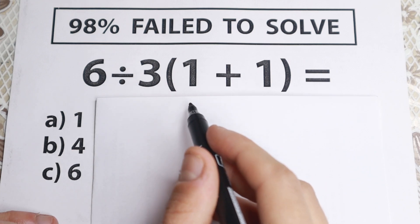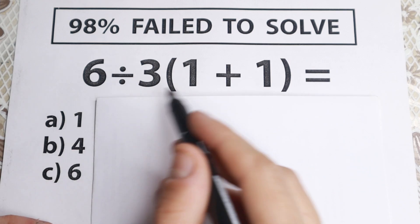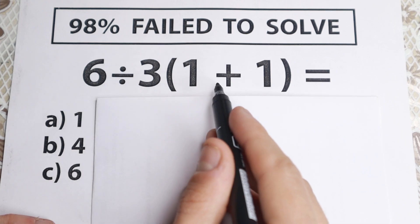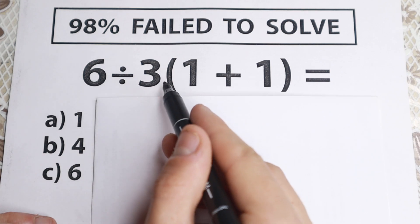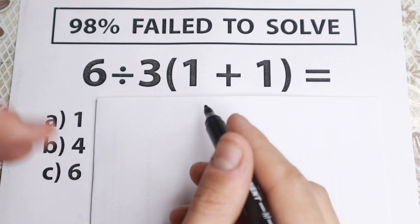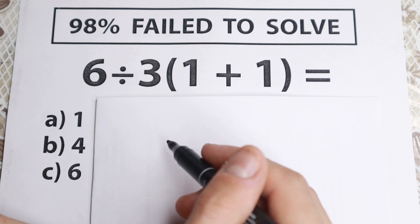6 divided by 3 and 1 plus 1 in the parentheses. So no cubes, no fourth power, right here we have only one parenthesis, division, and not a huge number. We have 6, 3, 1 plus 1. It looks like a kid's problem so everyone can solve this correctly.